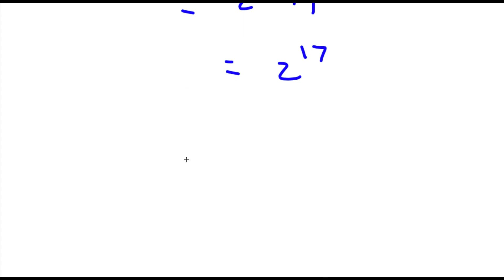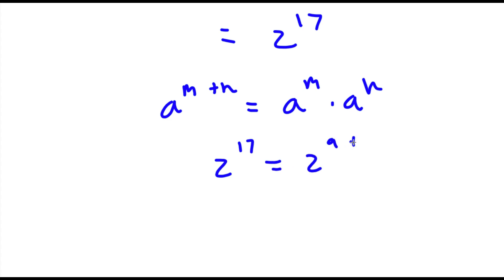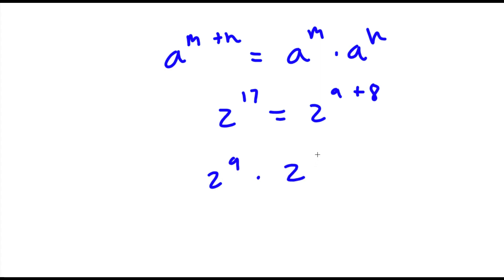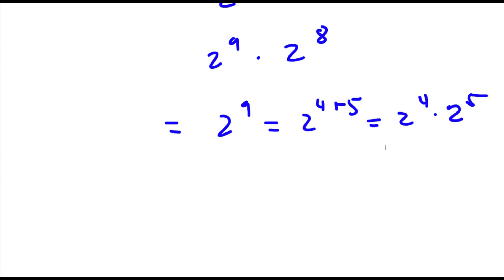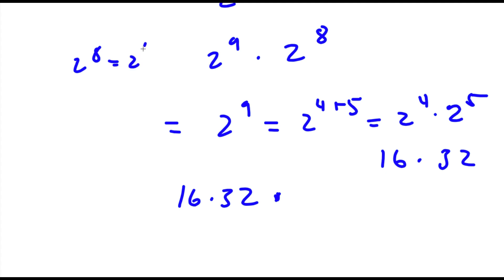Which is equal to 2 to the power of 17. Now to simplify 2 to the power of 17, I can write it as 2 to the power of 9 plus 8, which equals 2 to the power of 9 times 2 to the power of 8. Now 2 to the power of 9 is equal to 2 to the power of 4 plus 5, which is 2 to the power of 4 times 2 to the power of 5. So 2 to the power of 4 is 16 and 2 to the power of 5 is 32. So now I have 16 times 32 times 2 to the power of 8.